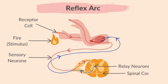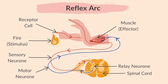The sensory neuron passes the impulse on to the relay neuron in the spinal cord. The relay neuron connects to the motor neuron and passes the impulse on. The motor neuron carries the impulse to a muscle in the arm — that is the effector. The muscle will contract and pull the arm away from the fire. This is the response.